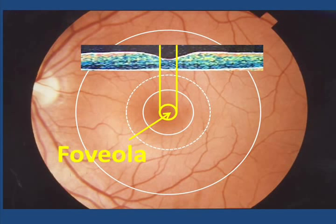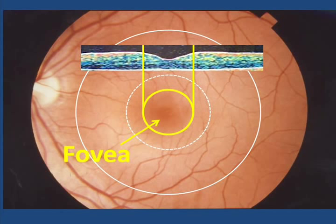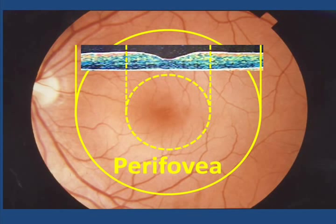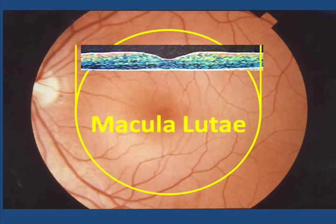So again, the floor of the pit is the foveola, and the pit itself is called the fovea. The area encompassed by the yellow lines here is the parafoveal area, and then the perifoveal area. Finally, there is the area of the macula, which is only about a quarter of an inch across.